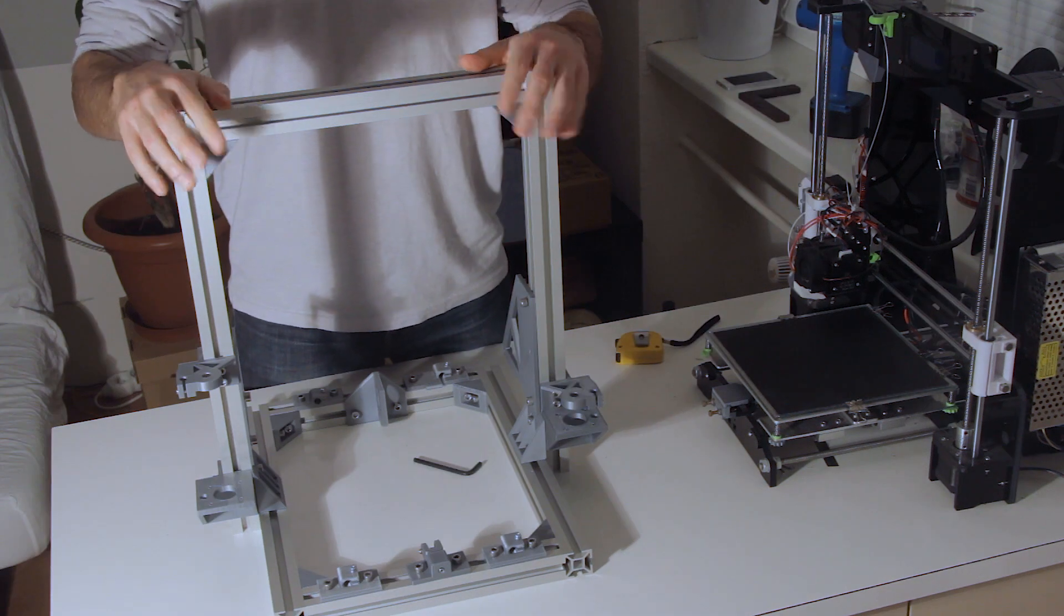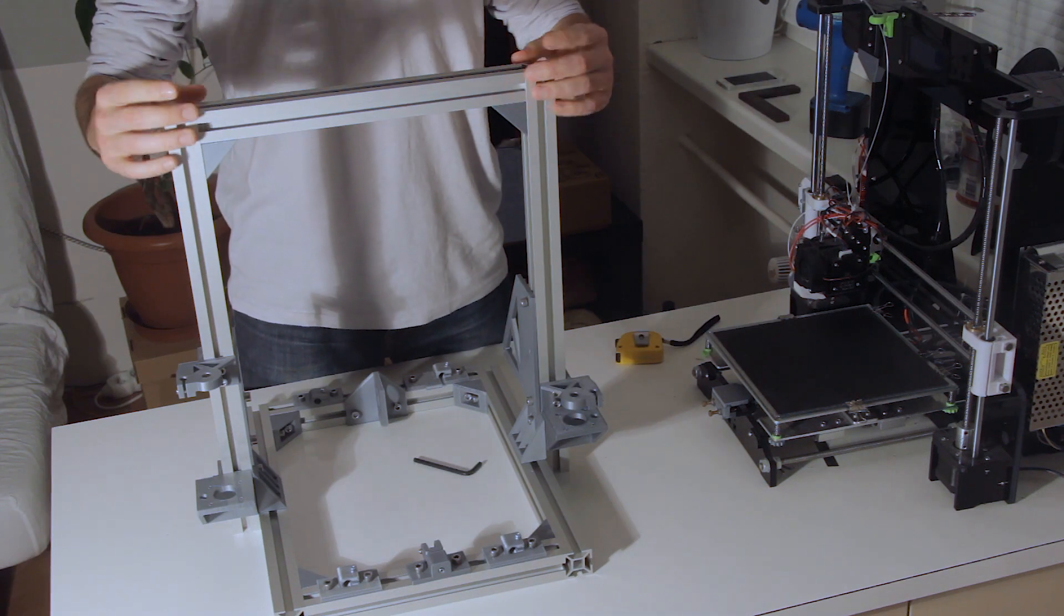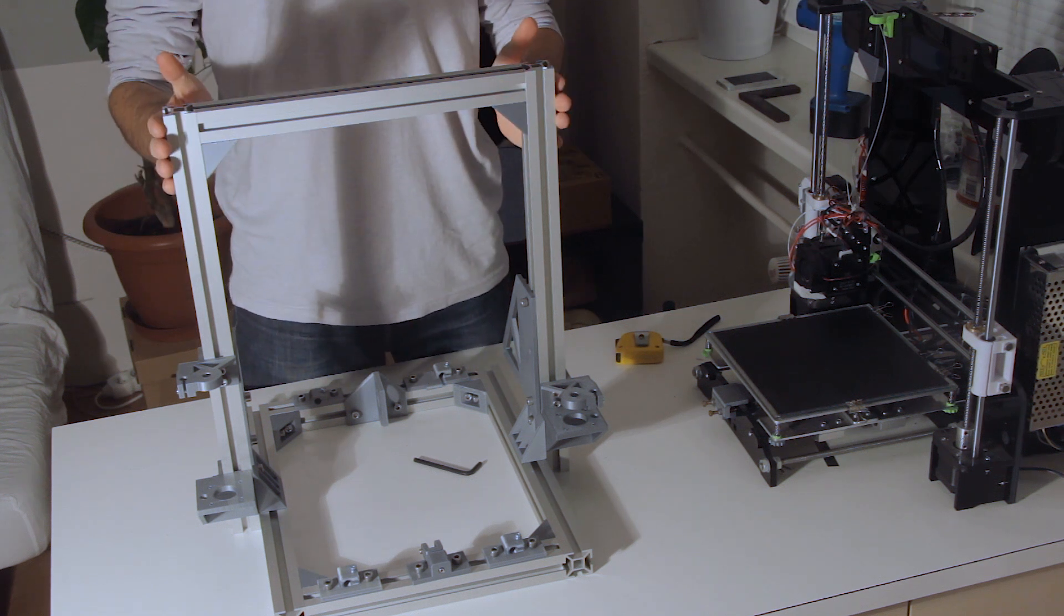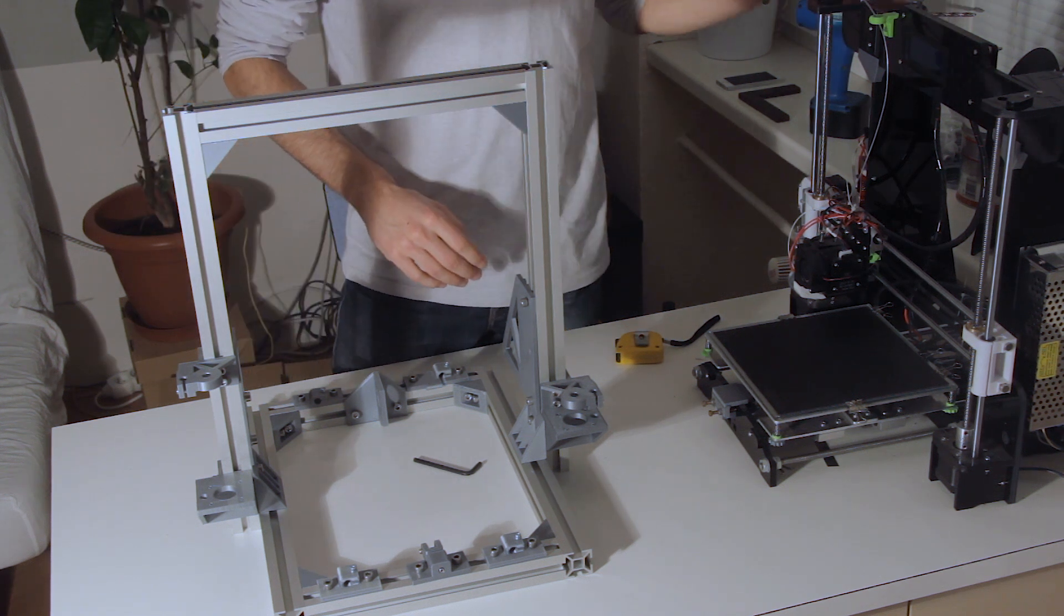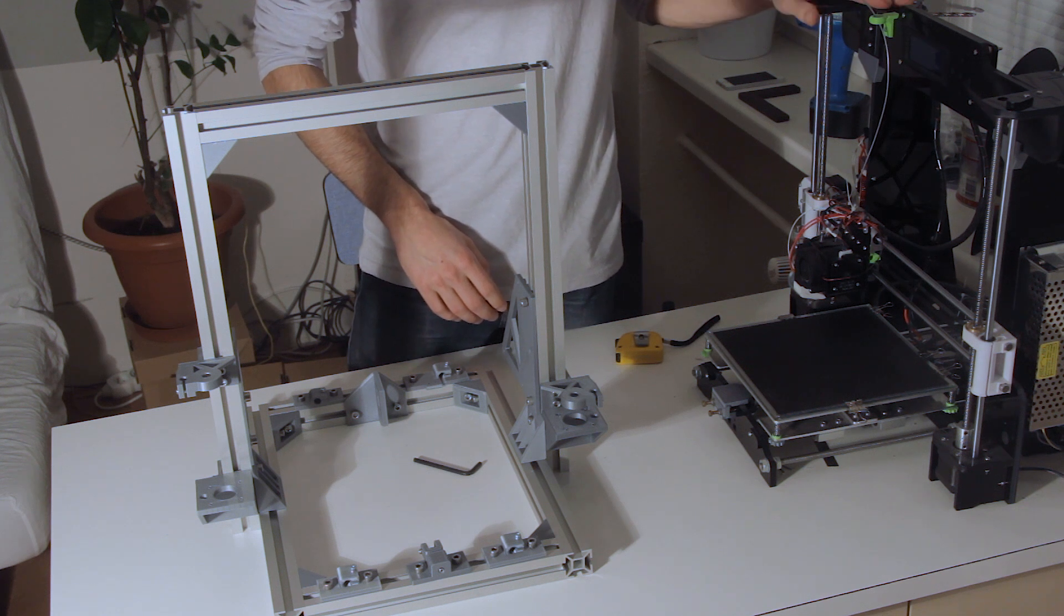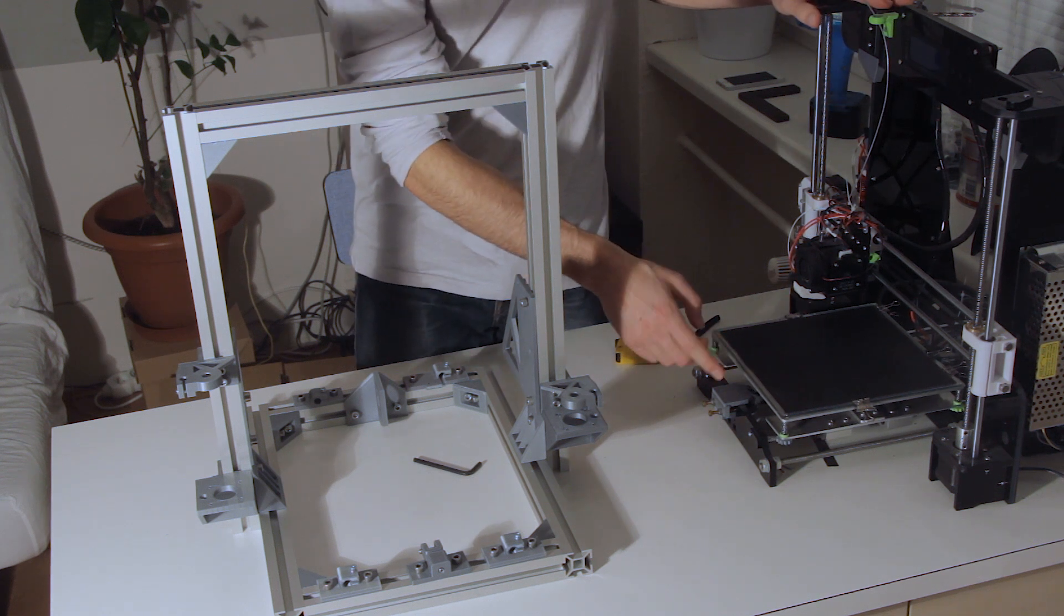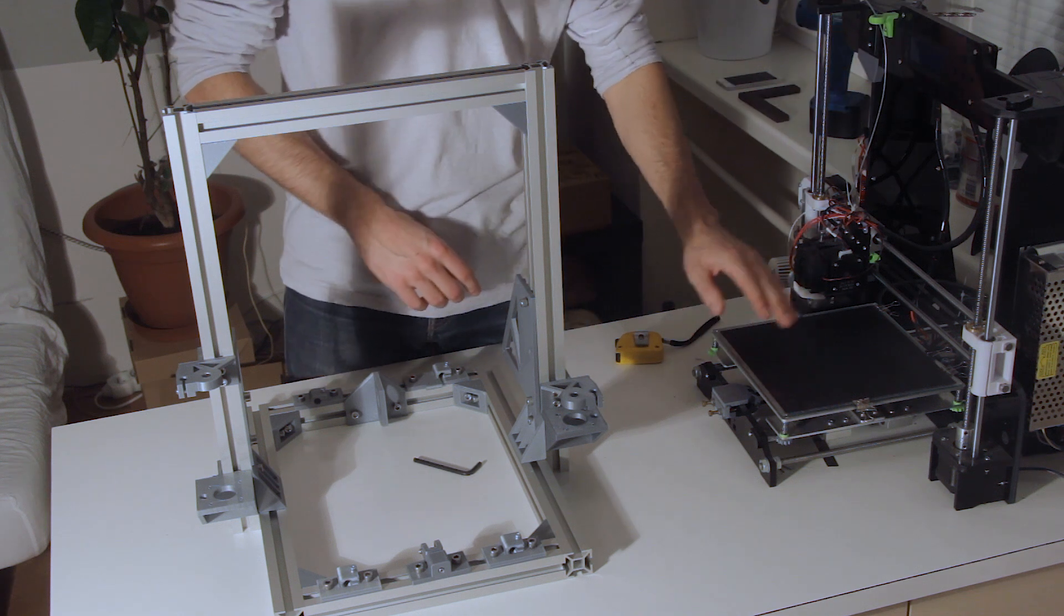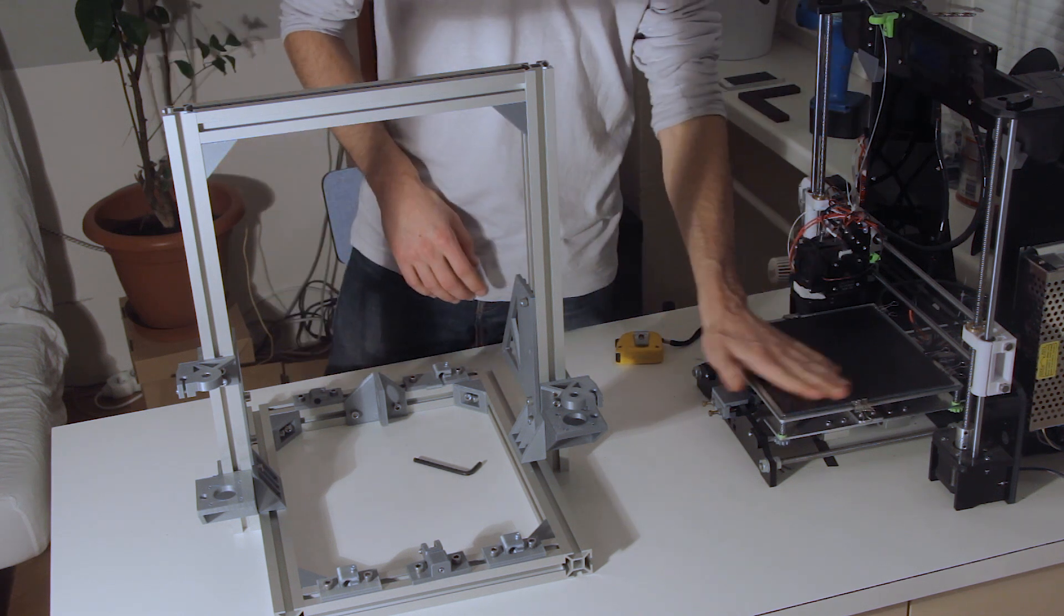Alright, so now that the frame is built, I have checked for squareness everywhere. So everything is nice and square to each other. I am going to start taking apart the original printer. I am probably going to start with retracting the filament and taking apart the Y axis and installing it in here.